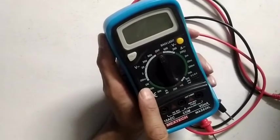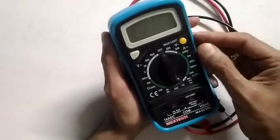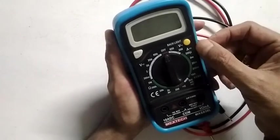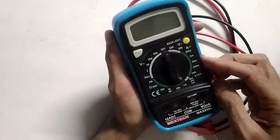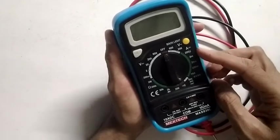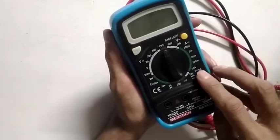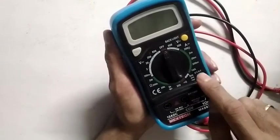You can also measure current, and the thing you need to remember is it is only for DC. DC measurement of current starts from 200 micro ampere and goes up to 10 ampere.